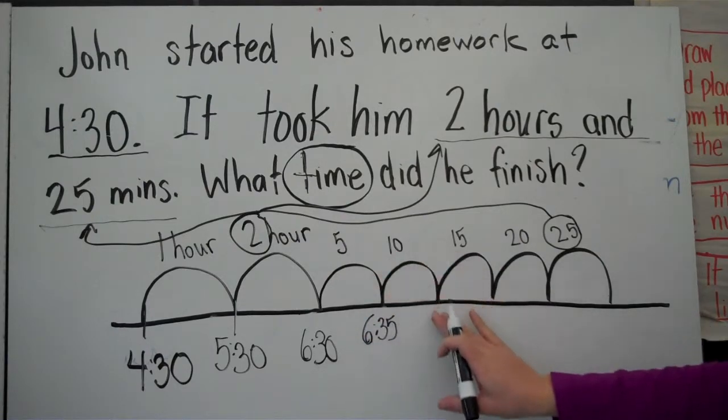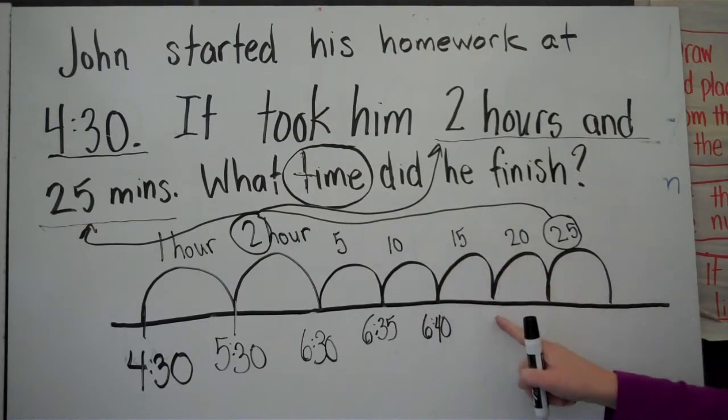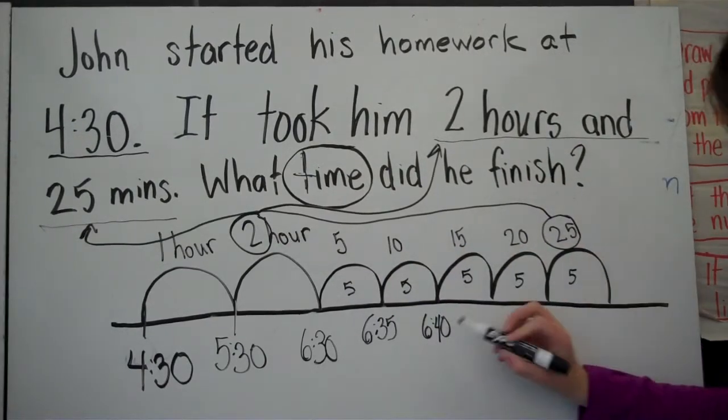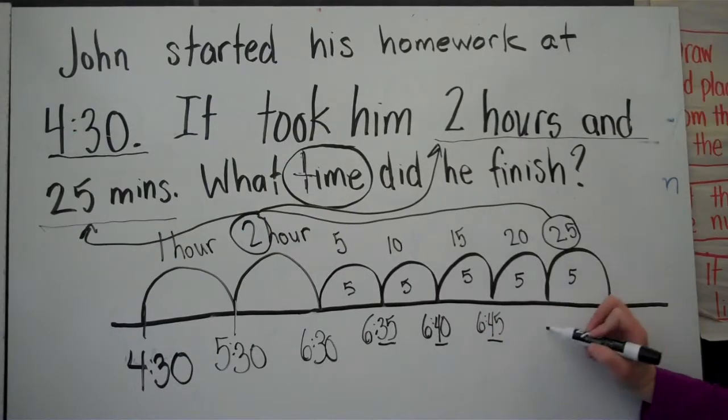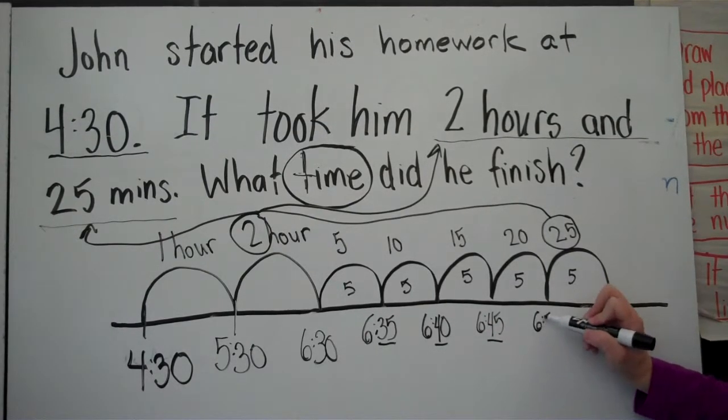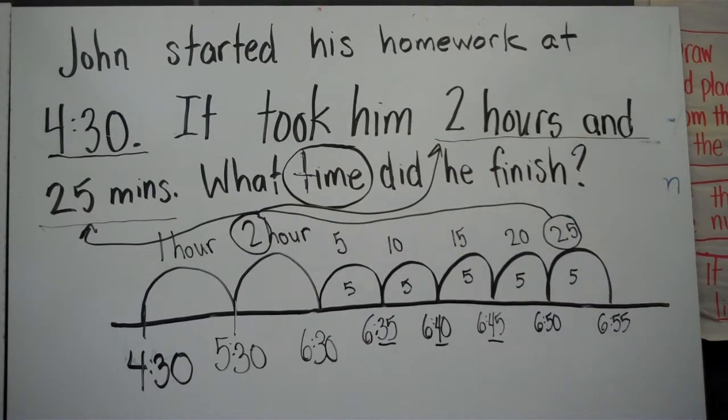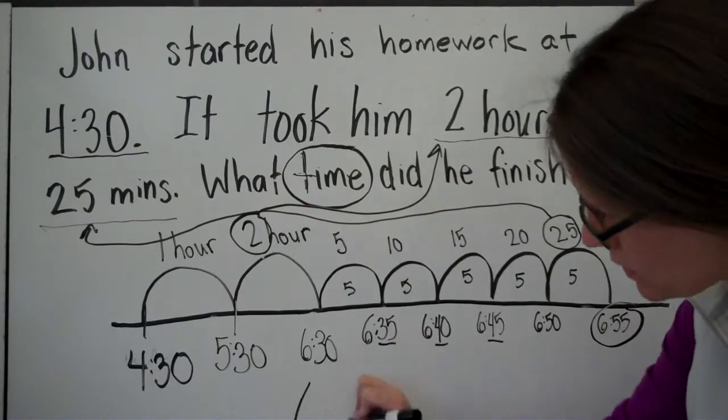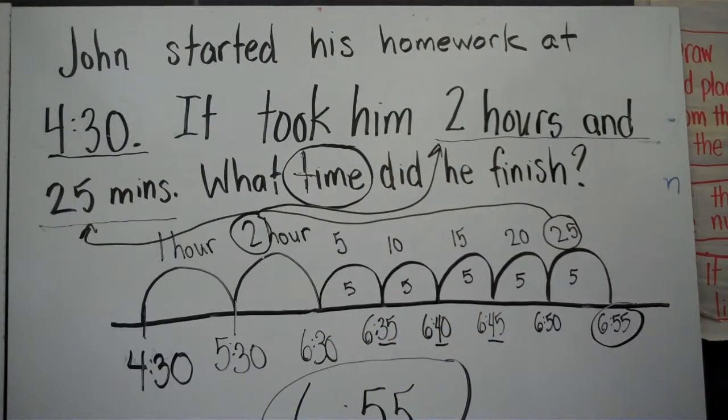I'm going 5 more minutes, it's going to be 6:40. 5 more minutes, because remember, this is really 5 minute hops. And it's going to be 6:45. I'm counting by 5's. In 5 minutes, it will be 6:50. And in 5 more minutes, it will be 6:55. So what time did he end doing his homework that took him 2 hours and 25 minutes? The time that he ended is 6:55. That was what time he ended his homework.